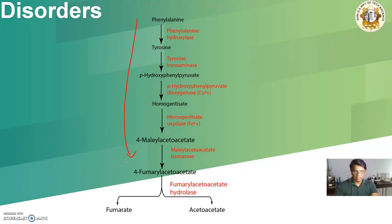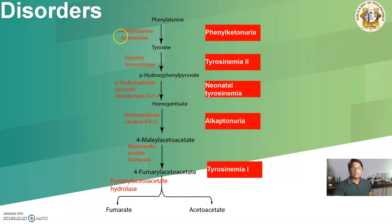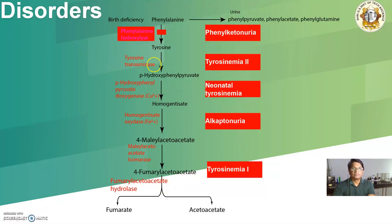To summarize: phenylalanine is converted into tyrosine, tyrosine into para-hydroxyphenylpyruvate, then into homogentisate, maleylacetoacetate, and 4-fumarylacetoacetate. The enzymes responsible for each step are key. Depletion of phenylalanine hydroxylase causes phenylketonuria (PKU). Tyrosine transaminase deficiency causes tyrosinemia type II. Para-hydroxyphenylpyruvate dioxygenase deficiency causes neonatal tyrosinemia. Homogentisate oxidase deficiency causes alkaptonuria. Maleylacetoacetate isomerase or fumarylacetoacetate hydrolase deficiency causes tyrosinemia type I.